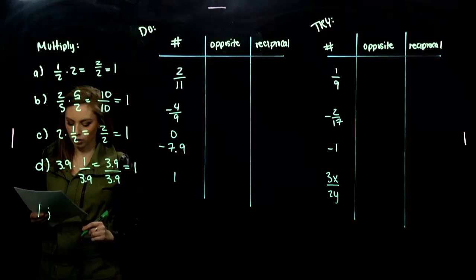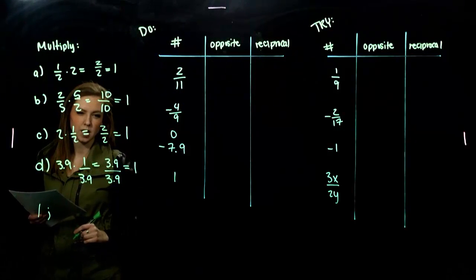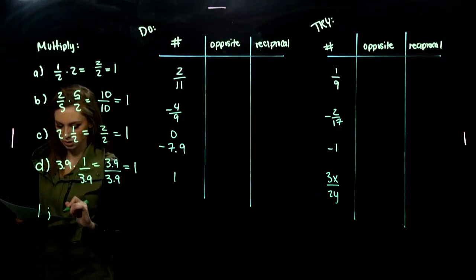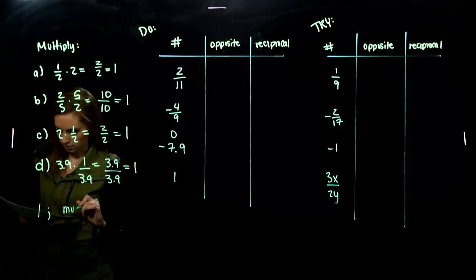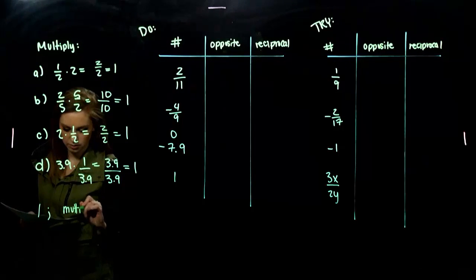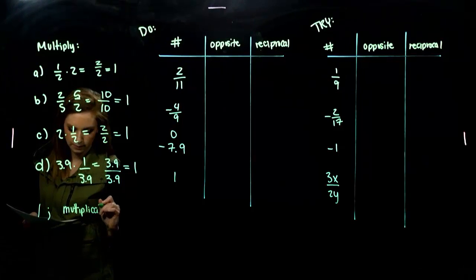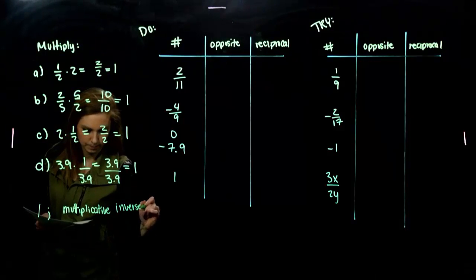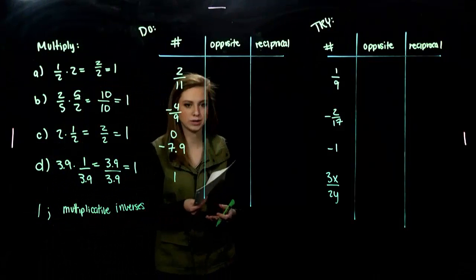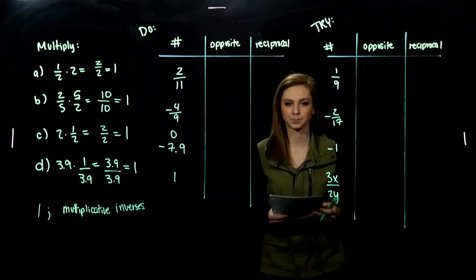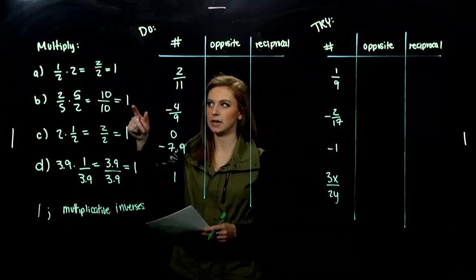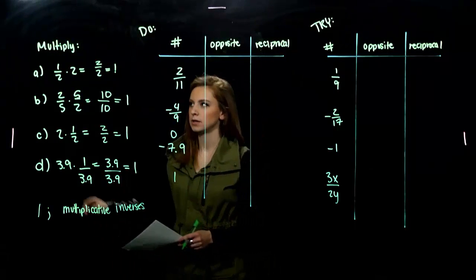Such numbers are called reciprocals. We've seen them before in that review chapter when we were talking about division. Another word for reciprocals is the multiplicative inverses. Because inverses always give you out the identity. If you multiply something times its inverse, and the multiplicative identity is 1 every single time.